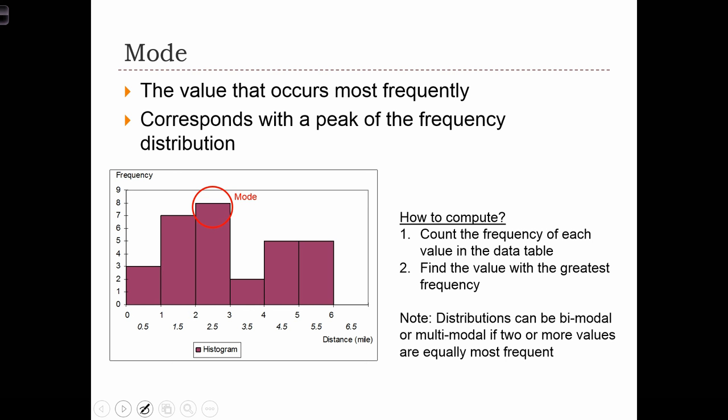There might be cases where data values are tied, in which case you have bimodal or multimodal distributions. And the mode in that case is reported as each of the individual tied modes in the data set.